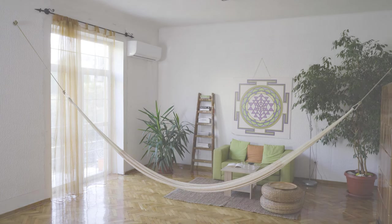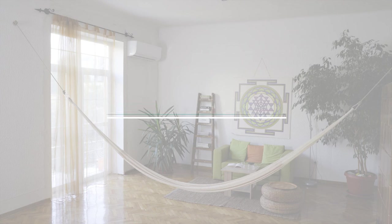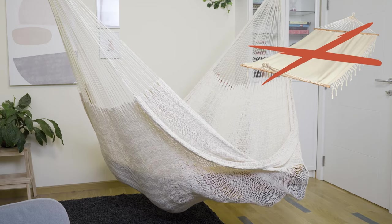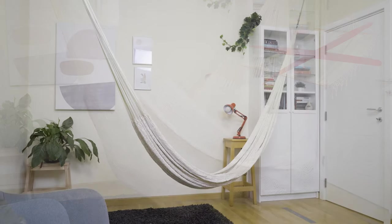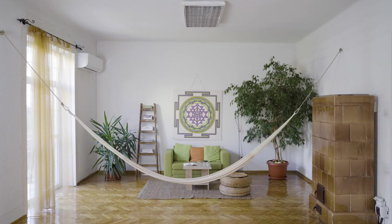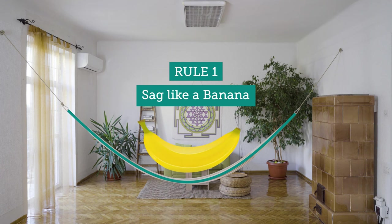No matter whether the hammock is suspended indoors or outdoors, there are four basic rules for hanging a hammock, the only exception being the American-style hammocks. The good news is that we don't need to make any complex calculations to follow these rules. The first rule is to hang the hammock so that it approximately forms the shape of a banana or a sickle.